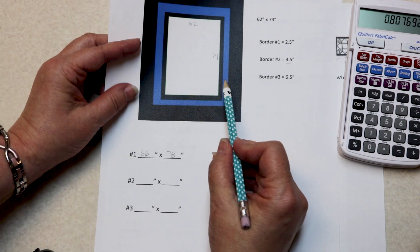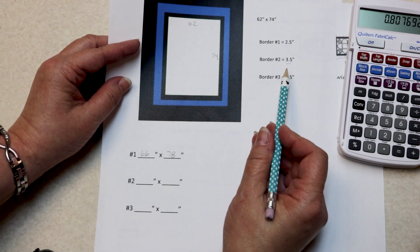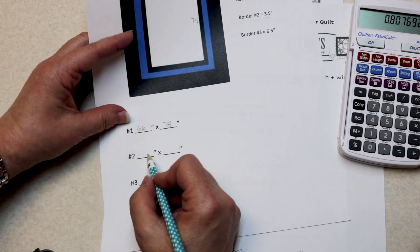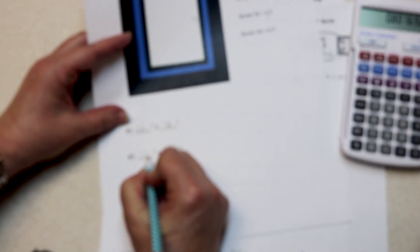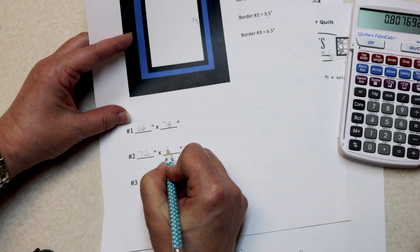We've just added three inches on each side of our quilt—that's six more inches. How big is our quilt now? It's 72 by 84.